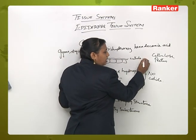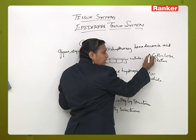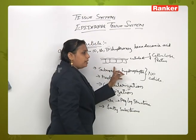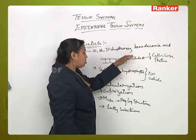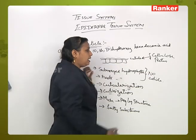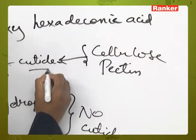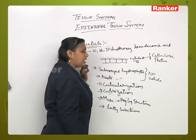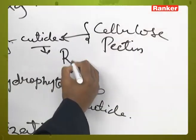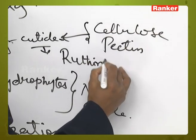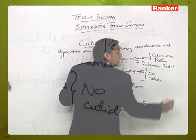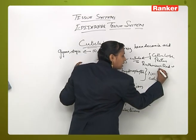Where cuticle is present, it is found in association with the cell wall of the epidermal cells — attached to the cellulose and pectin layer. When this cuticle layer or cutin is reacted with a substance called ruthenium red, it will turn into a dark red color.